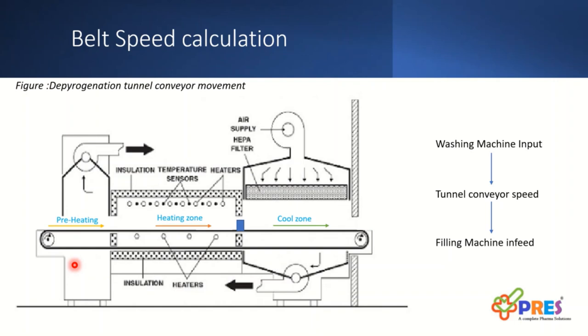In our next slide, we will be able to see how the washing input, tunnel conveyor speed, and filling infeed are interconnected.